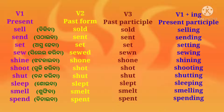Shoot (gulli kariiba): second form — shot; third form — shot; fourth form — shooting. Shut (bondha kariiba): second form — shut; third form — shut; fourth form — shutting. Sleep (soibiba): second form — slept; third form — slept; fourth form — sleeping.